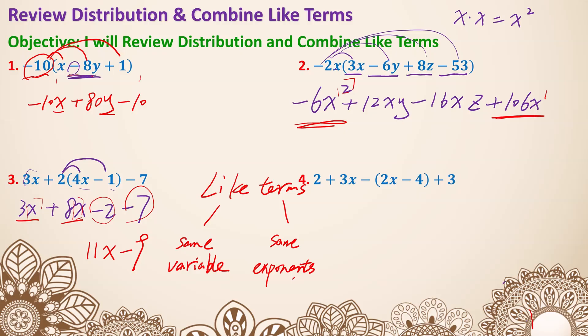Number 4 is very similar to number 3, but you might notice there's no number attached to the parentheses. You do have a number there — it's actually a negative 1 times 2x minus 4. The number 1 is a bit tricky; 1 always has the ability to be invisible. Whenever you don't see any number, it's going to be a 1. For example, x to the first power — we don't write the 1, but it's actually there. So x is the same as x to the first power.